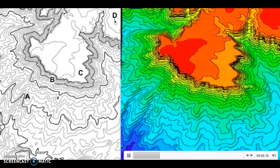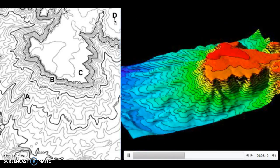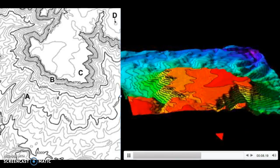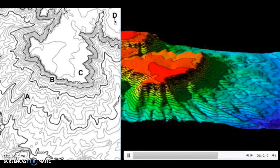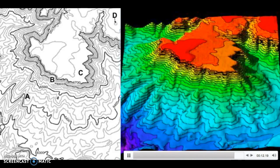Look at the index contour lines, the ones that have a value, and notice that the elevation on this map is increasing as you move from the bottom of the map to the top of the map, or from south to north.